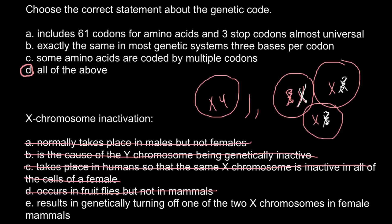Only one active X chromosome exists per cell. This is how X chromosomes are balanced: in a male cell, one X chromosome — always from the mother's side — is always active, and the father provides the Y chromosome. In females there are two X chromosomes, one from the mother's side and one from the father's side, and they are turned off randomly so that only one functional X chromosome is present per cell. So the correct answer is E.